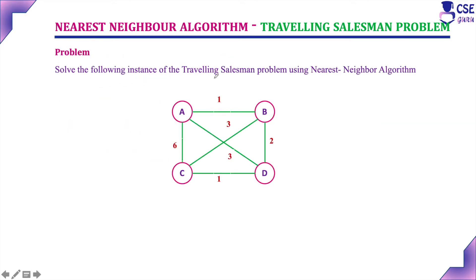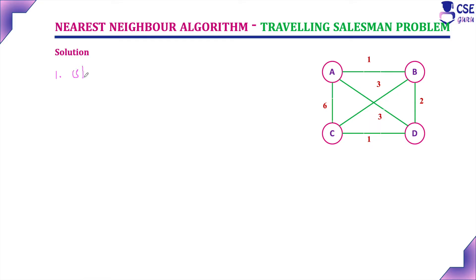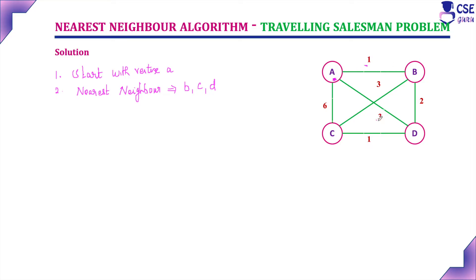Problem: solve the following instance of the traveling salesman problem using the nearest neighbor algorithm. This is the given graph with the costs to travel from one city to another. We will implement the nearest neighbor algorithm. First, we choose the starting city — here we start with vertex A in alphabetical order. From A, the neighbors are B, C, and D. We choose the one with the least cost: A to B costs 1, A to D costs 3, A to C costs 6. So we choose A to B with cost 1.